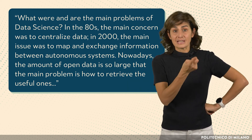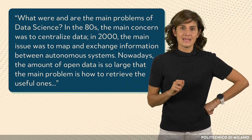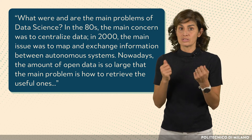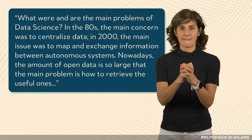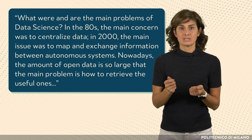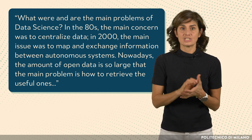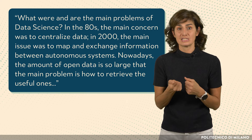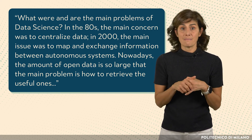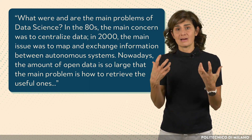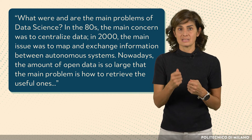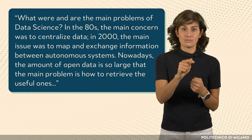And now there come the last examples — please note that they still make reference to the same paper. What were and are the main problems of data science? In the 80s the main concern was to centralize data. In 2000 the main issue was to map and exchange information between autonomous systems. Nowadays, the amount of open data is so large that the main problem is how to retrieve the useful ones.